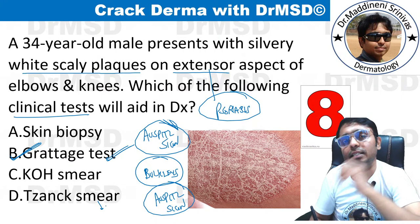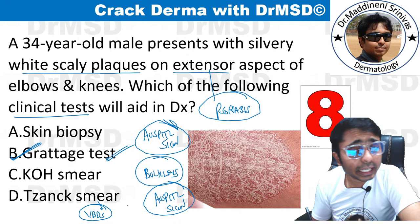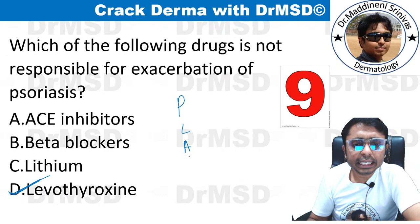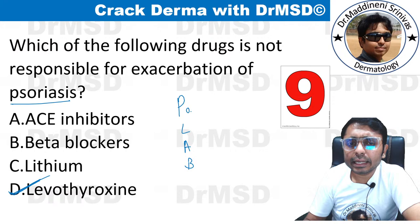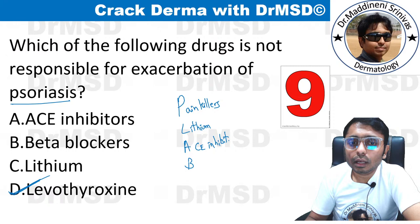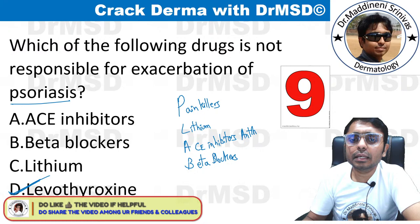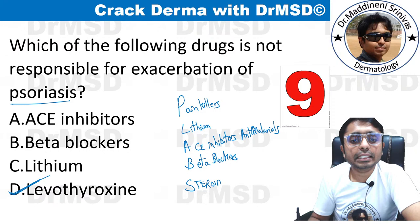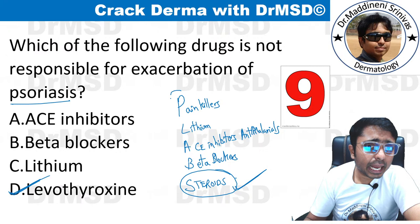Note: Tzanck smear is a bedside test used in patients with vesiculobullous disorders — we look for acantholysis or multinucleated giant cells. The drugs that can exacerbate psoriasis can be remembered with the mnemonic PLANB: P — painkillers (NSAIDs), L — lithium, A — ACE inhibitors, N — antimalarials, B — beta blockers. Also remember: withdrawal of steroids in a psoriatic patient can also exacerbate psoriasis.